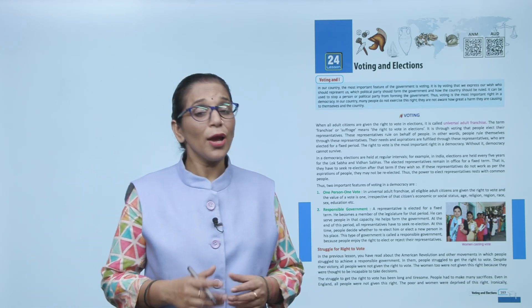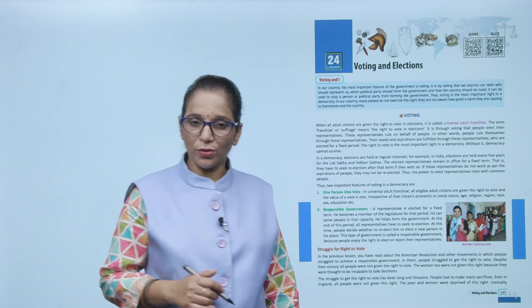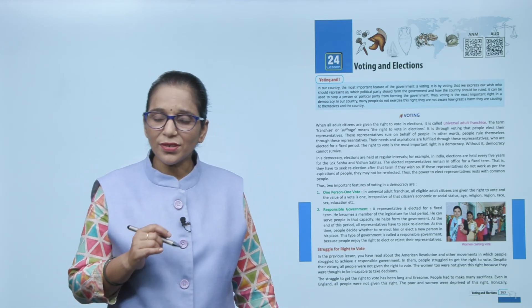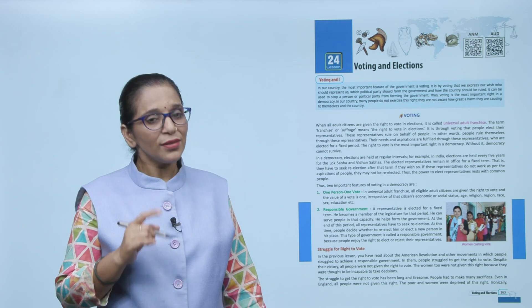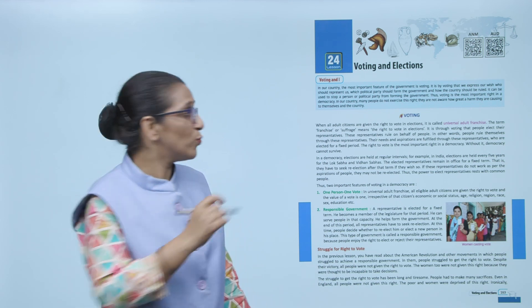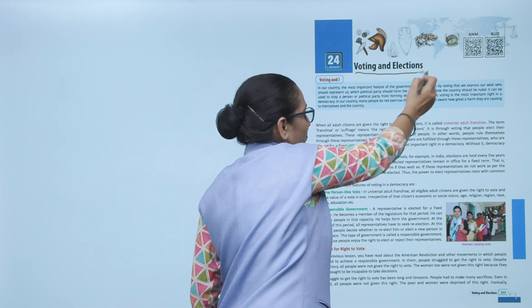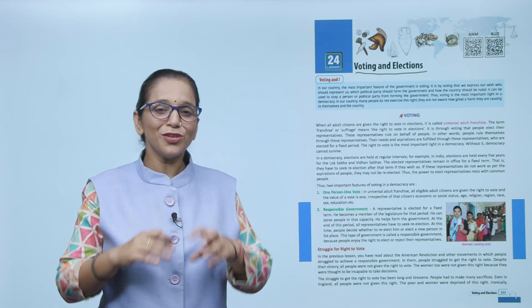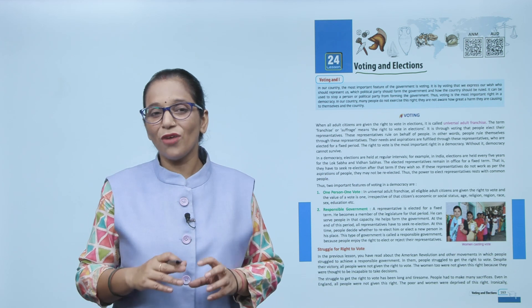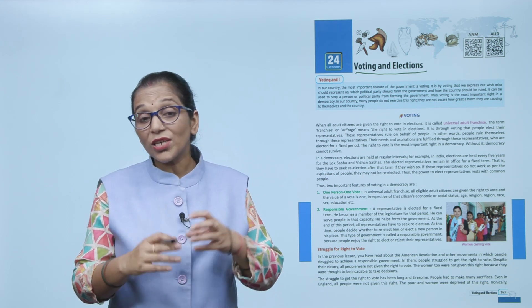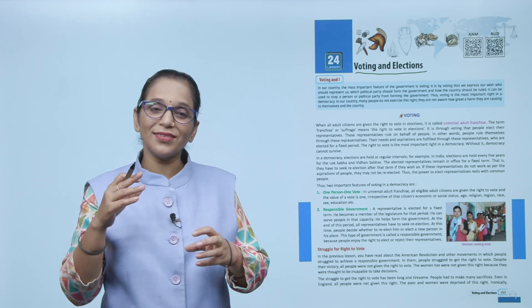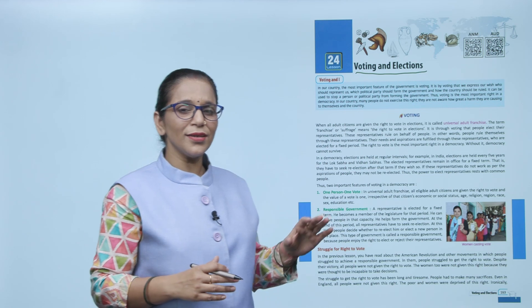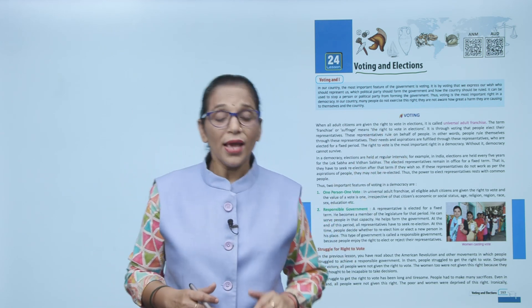Hello everyone, I hope you all are good. Today we are going to discuss the topic of civics that is voting and elections. In this chapter we are going to discuss what is the procedure of voting and how the election process happens. Before starting the chapter we need to understand what exactly is voting.